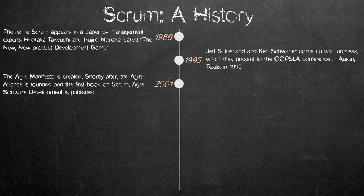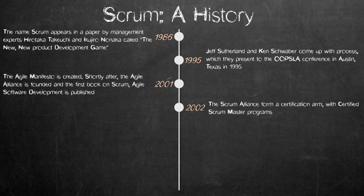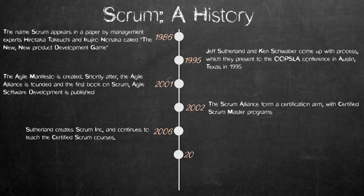Scrum's approach to planning and managing product development involves bringing decision-making authority to the level of operational properties and certainties. Schwaber, with others, founded the Scrum Alliance and set up the Certified Scrum Accreditation Series in 2002. In 2006, Sutherland created Scrum Inc. and continues to teach the Certified Scrum Courses.